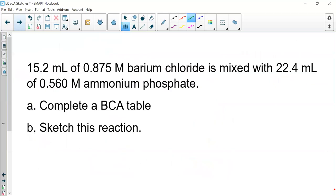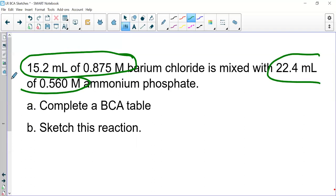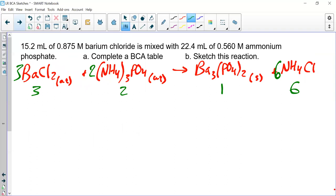Let me quickly run through one more. This is a molarity stoichiometry problem. What's different? I didn't give you grams. I gave you volume and molarity of barium chloride solution. Anytime you're given molarity, it's implied that it's a solution. I also gave you the volume and molarity of ammonium phosphate. We're going to complete a BCA table. We start with a balanced equation: coefficients three, two, one, six. BCA.